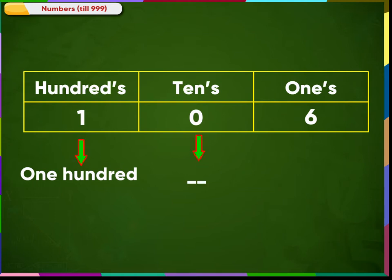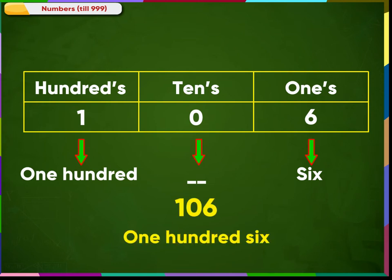Now in the tens place, there is no number, which means we will not write here anything for tens place. And this number is 6. So the number 106 is written as one hundred six in words and also read in the same manner.